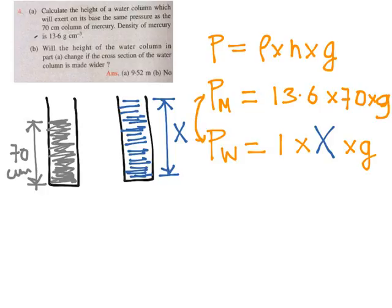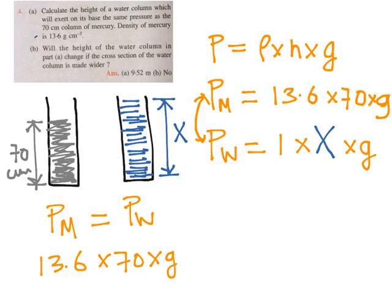The condition is that both pressures are the same. So PM, that is pressure due to mercury, is equal to pressure of water. If you equate this equation: 13.6 into 70 into g equals 1 into X into g.